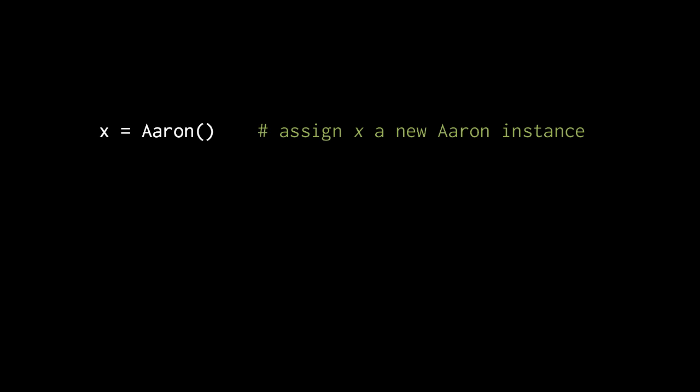Let's look now at how method calls work in Python. The goal here is when we invoke a method, say x.foo...